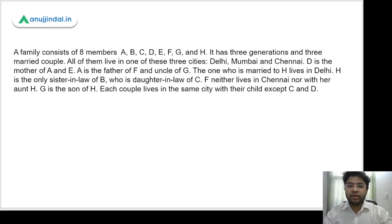Let's read the question. A family consists of 8 members: A, B, C, D, E, F, G, and H. It has 3 generations and 3 married couples. All of them live in one of these 3 cities: Delhi, Mumbai, and Chennai.